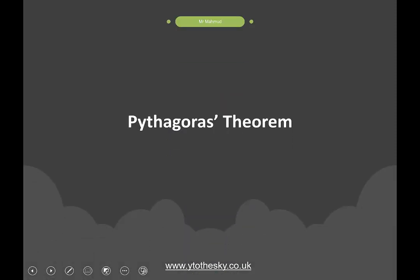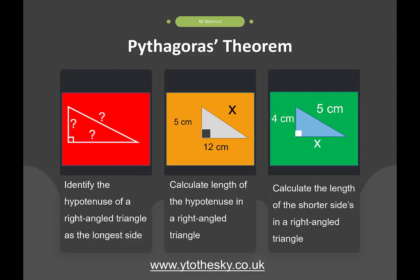Hello and welcome to Mr. Mahmood Maths. Today's lesson is going to be on Pythagoras' Theorem. At the end of this lesson, you should be able to identify the hypotenuse of a right-angled triangle as the longest side, calculate the length of the hypotenuse in a right-angled triangle, and calculate the length of the shorter sides in a right-angled triangle.